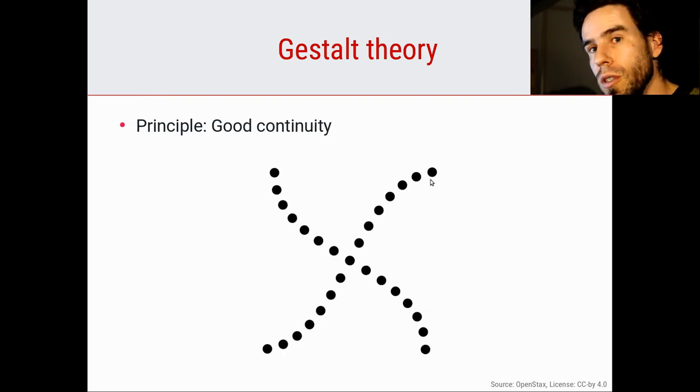Then we have the principle of good continuity. If we see a stimulus like this, you are inclined to see it as a smooth line and another smooth line. You might also see it as a cross. But no one would see this as one line that goes this way and another that goes that way. Our perception resists that interpretation, even though it's valid. We strongly prefer to see continuous lines and continuous shapes. Whenever we can make sense of visual information as continuous lines and smooth shapes, that's what we do. We prefer good continuity.